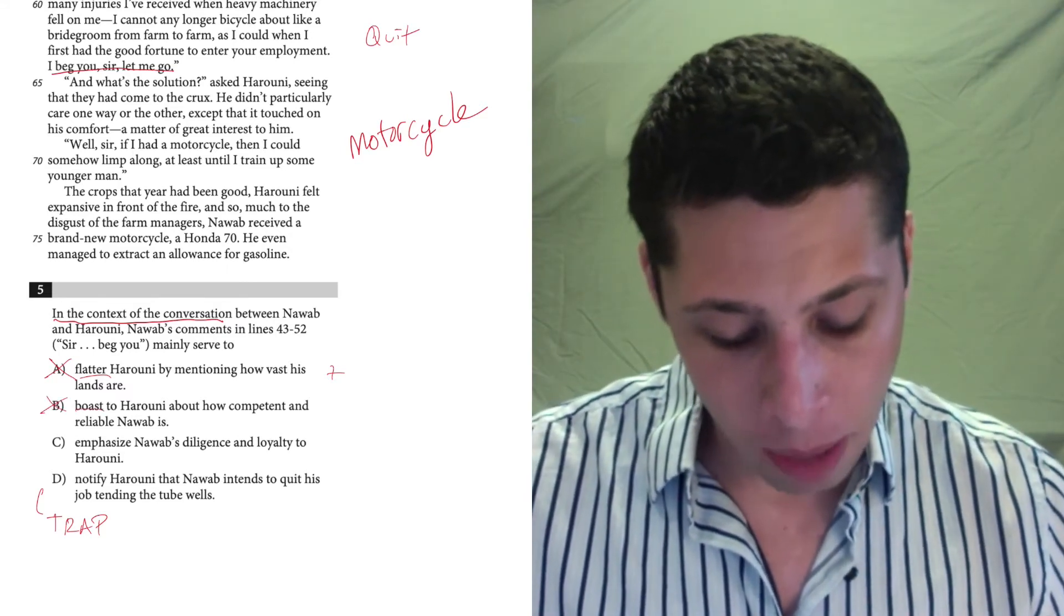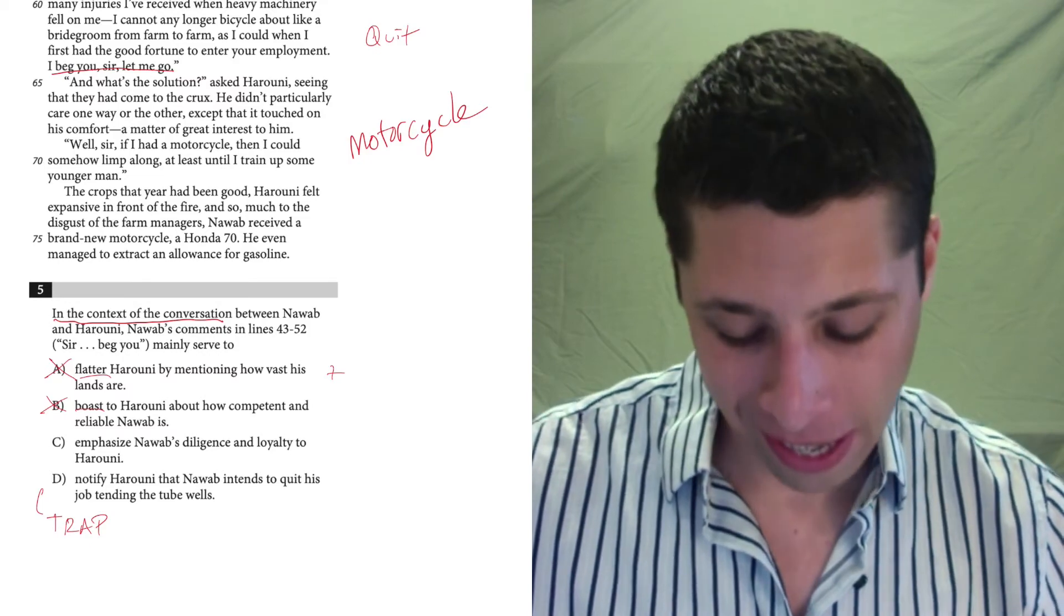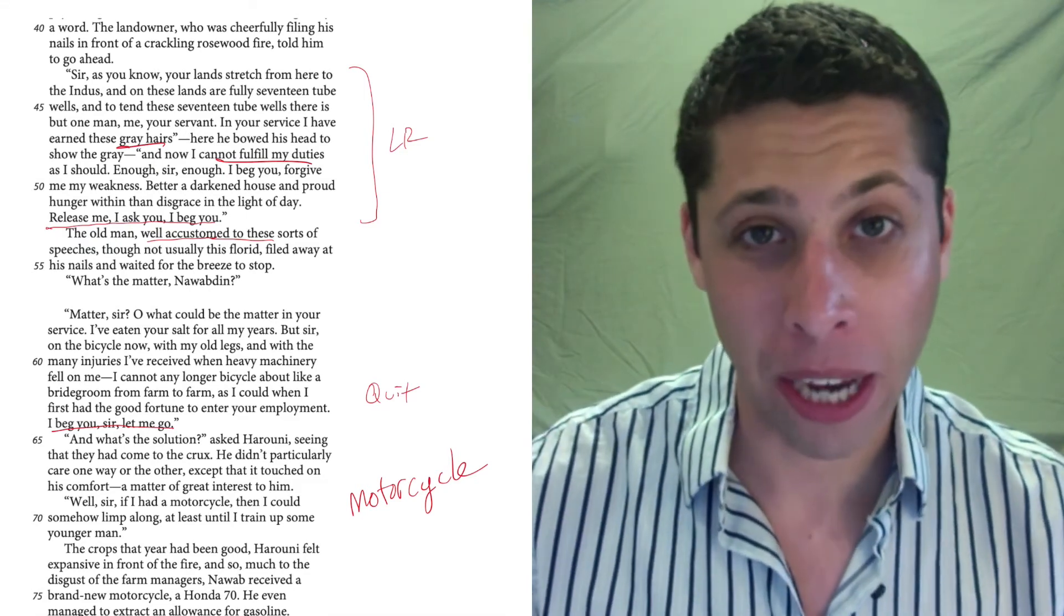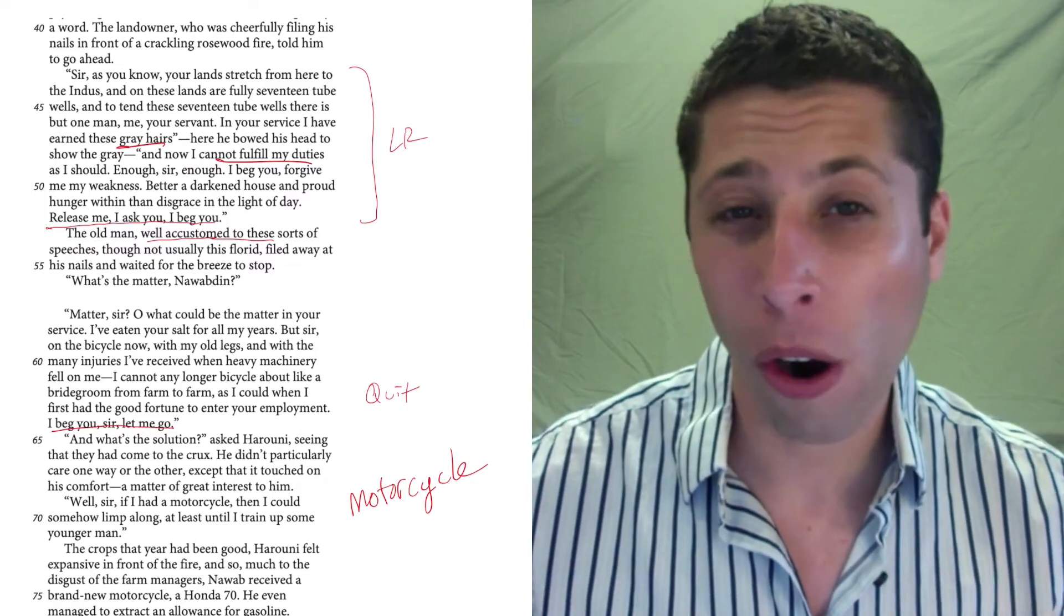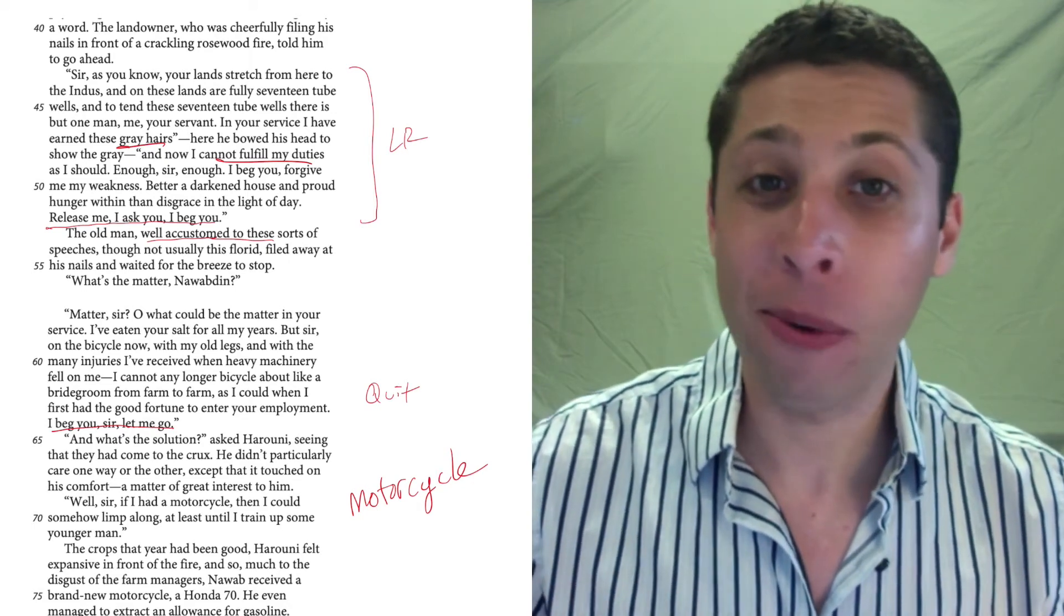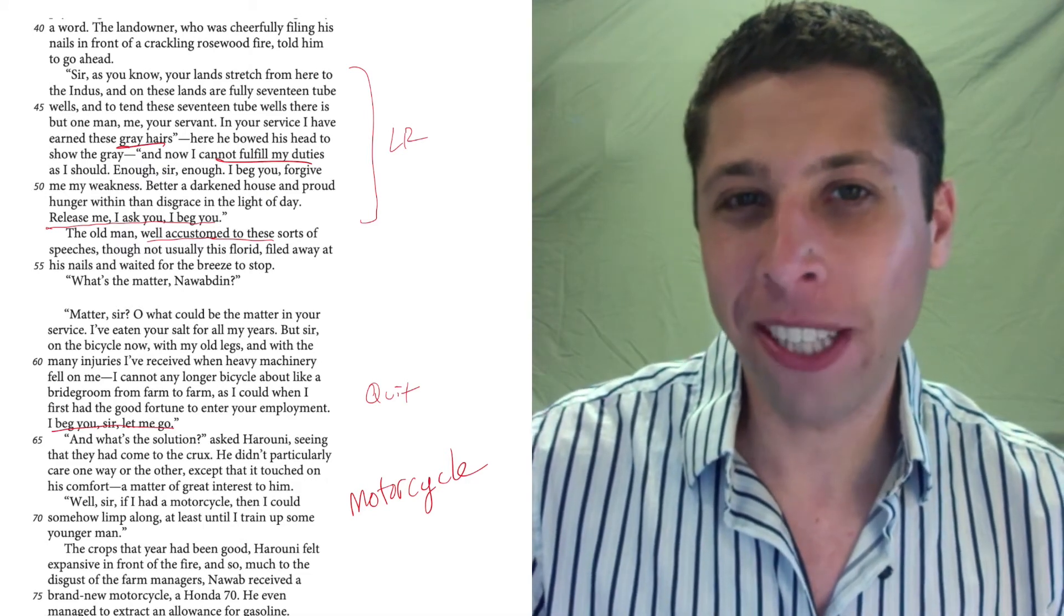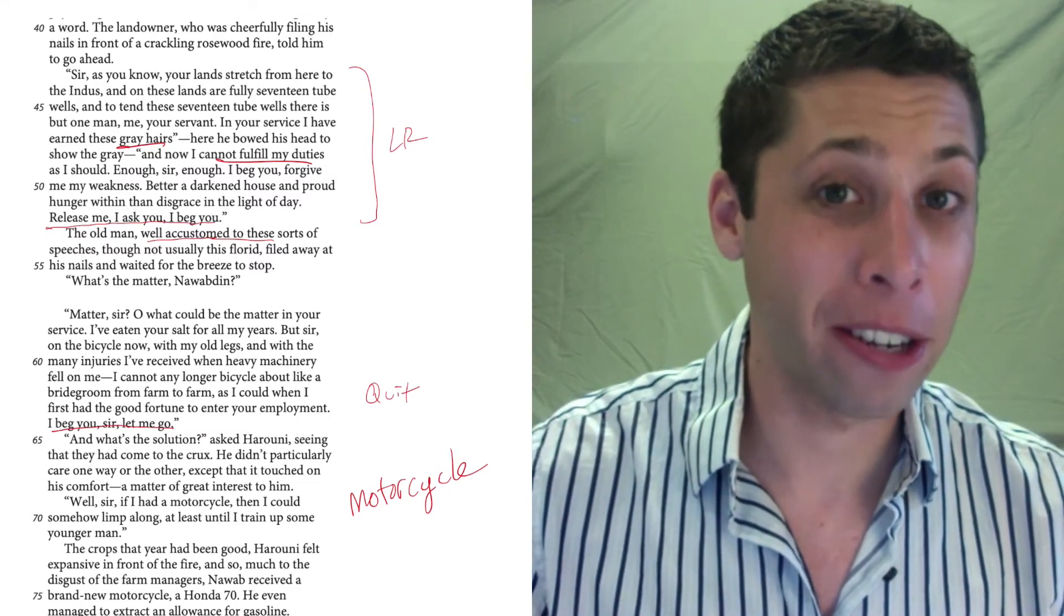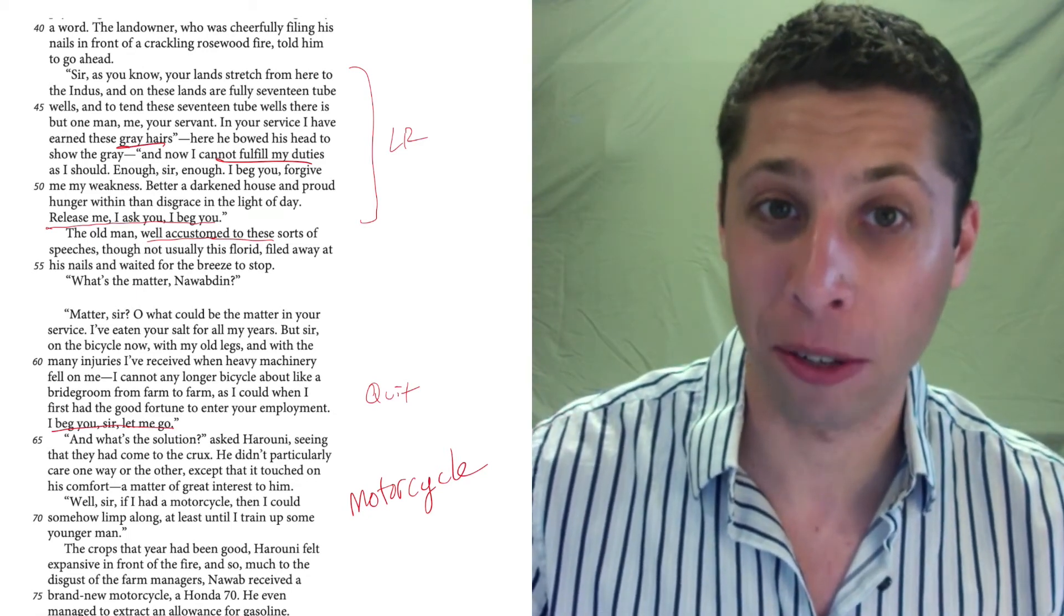C. Emphasize Nawab's diligence and loyalty to Haruni. Well, now we've got something. He's basically saying in these lines about how old and decrepit he has become through this, through the years, is saying how hard he has worked. He's worked so hard, it's beaten him down. He's a feeble old man now and he's using that to say, well, maybe I deserve this motorcycle that would help me out. So he's really buttering up Haruni, not by flattering Haruni, but by kind of flattering himself and saying like all the good hard work he's done for this guy that maybe he deserves to get this motorcycle.